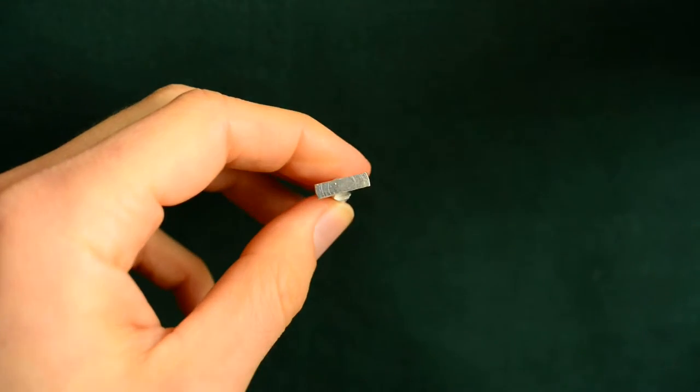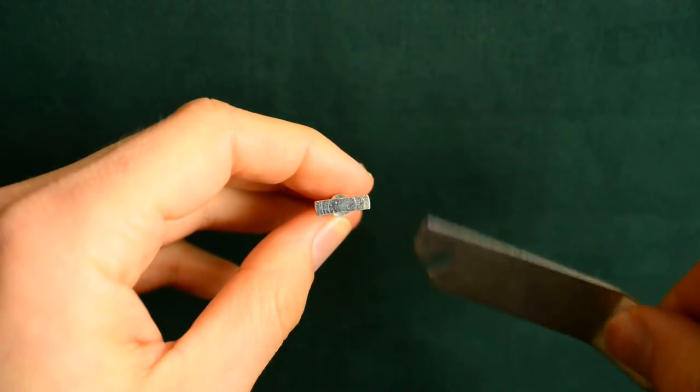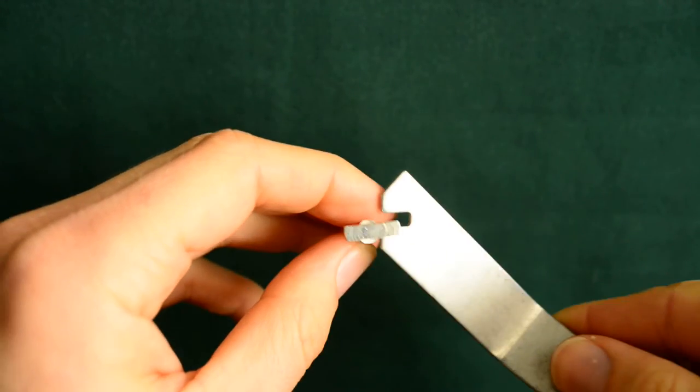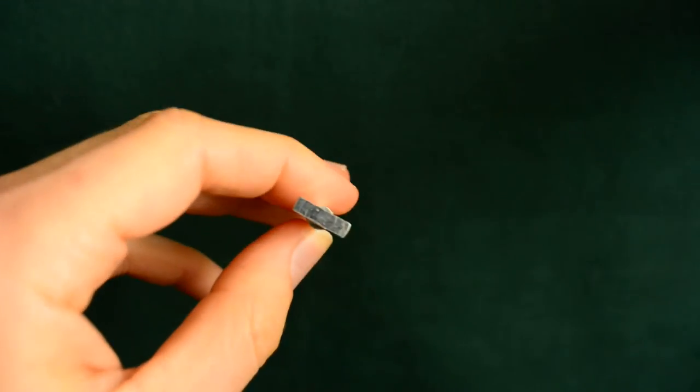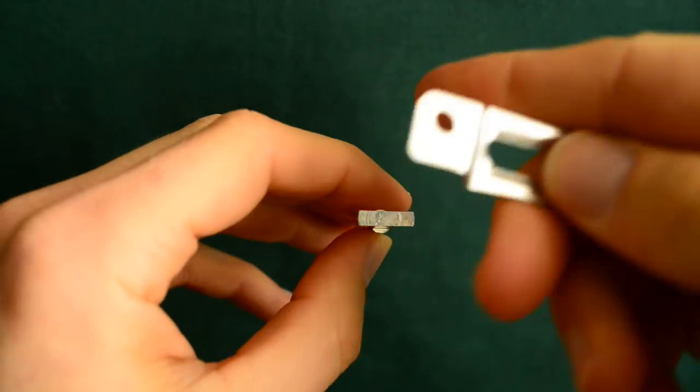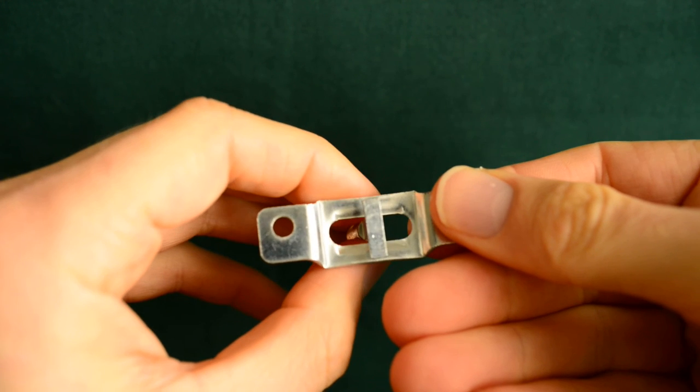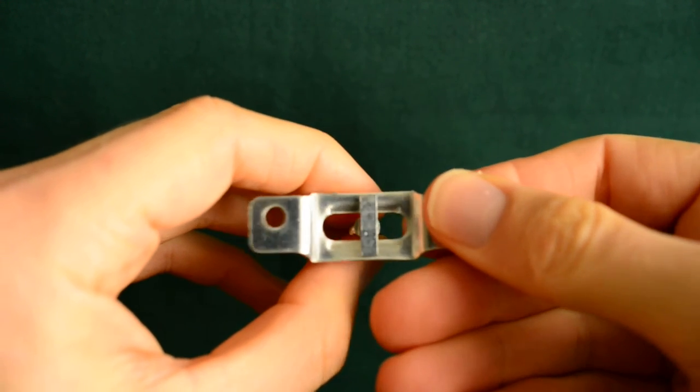Once that's in place, you need this special wrench to go in here and turn it. When you turn it, it allows it to lock into place like this so the print can't be taken off.